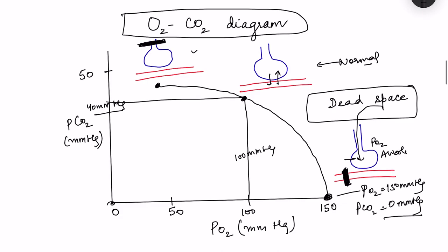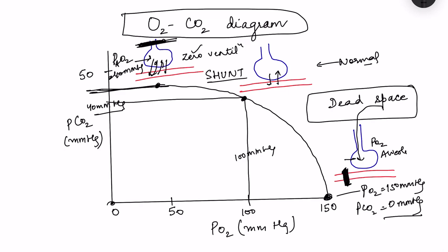The other extreme: the alveolus is blocked or collapsed — zero ventilation. Blood flows through without getting oxygenated. This is called a shunt. In this case the alveolar gases equilibrate with mixed venous blood, so PO2 ≈ 40 mmHg and PCO2 ≈ 45 mmHg — same as mixed venous blood.